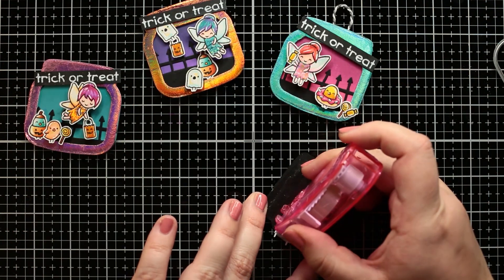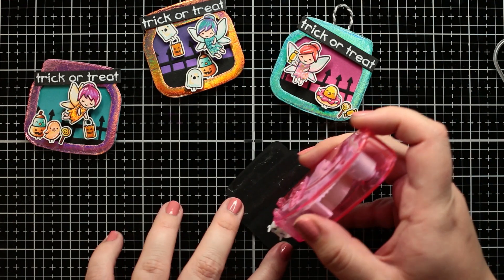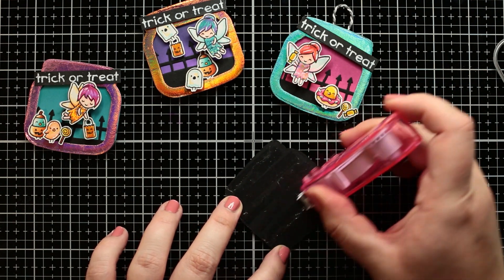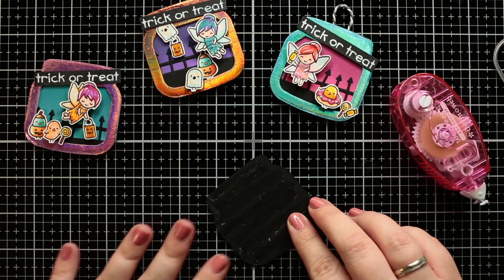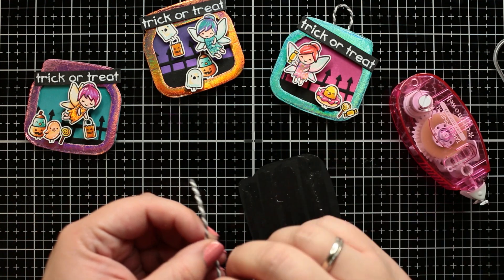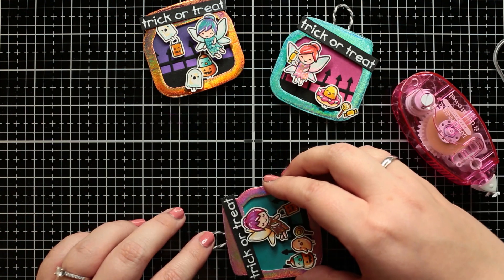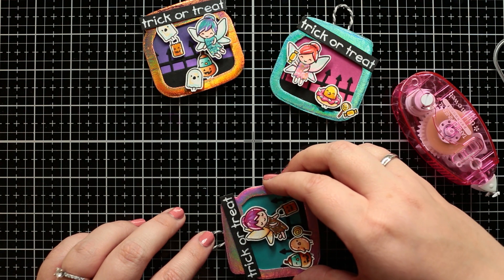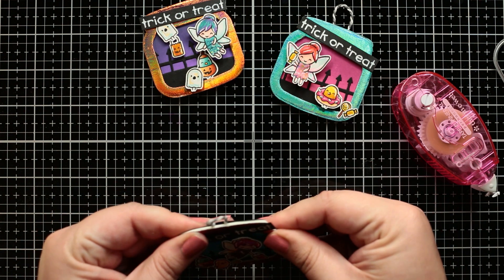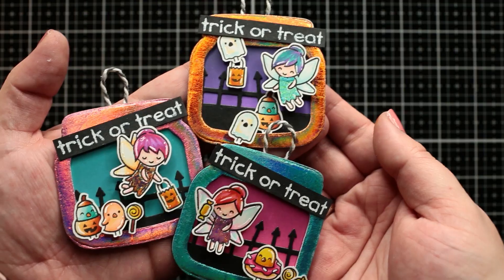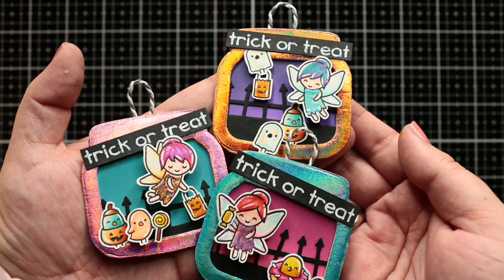In the end I have created three more jar die cuts. This time from onyx black cardstock. I have put adhesive on it with the tape runner excel adhesive and before I'm adhering the sandwich together I'm putting between them a gray cord. And the super shiny Halloween tags are done.